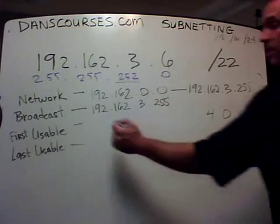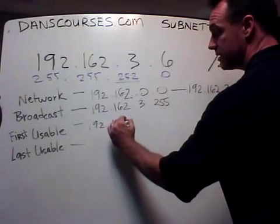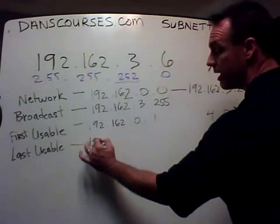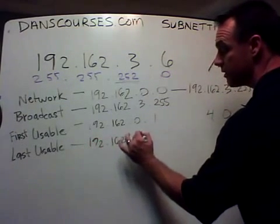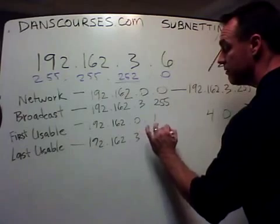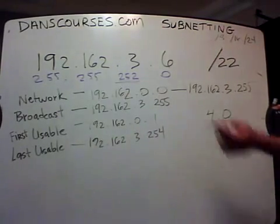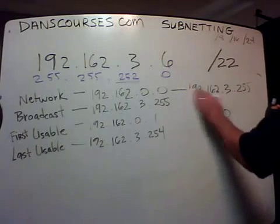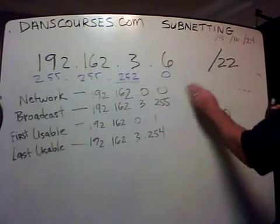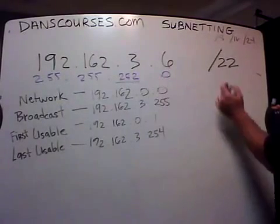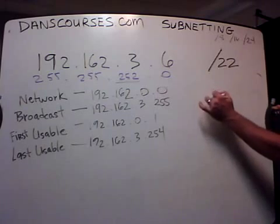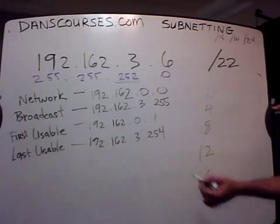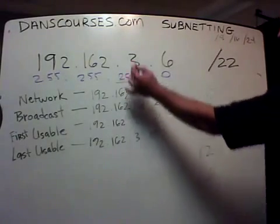The first usable host, 192.162.0.1. And the last usable host, 192.162.3.254. So the network, the broadcast, the first usable host, and the last usable host. Why is that? Because the magic number is 4, and the networks go up by 4: 0, 4, 8, 12, 16, all in this octet, in the third octet.